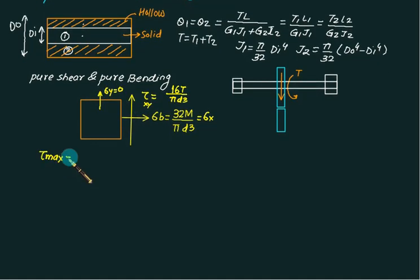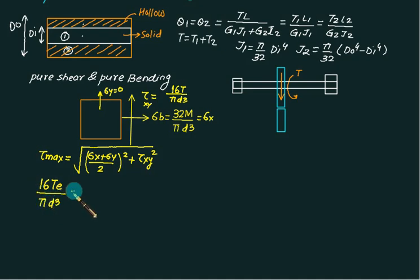We can find out τ_max is given as square root of [(σ_x plus σ_y)/2]² plus τ_xy². τ_max we can replace as 16T_equivalent divided by πd³. σ_x we put as 32, divided by 2 is 16. σ_y is zero, so the first term will be (16M/πd³)² plus (16T/πd³)².